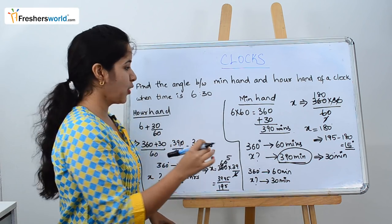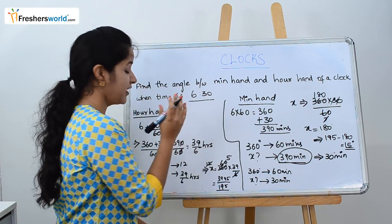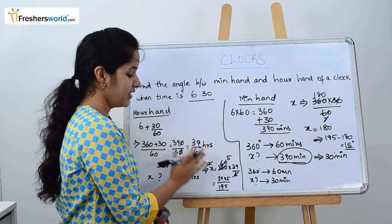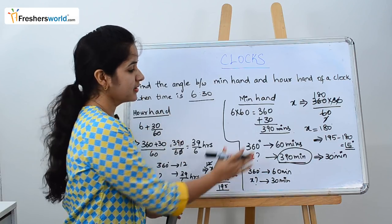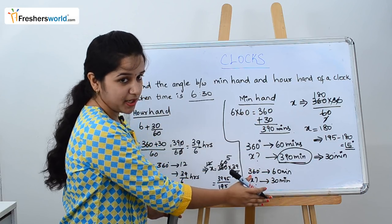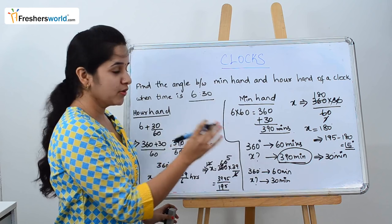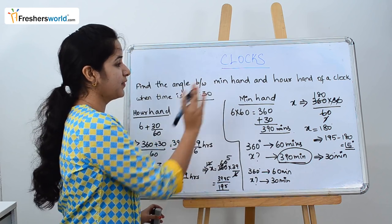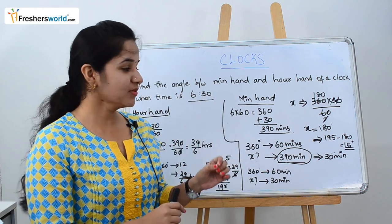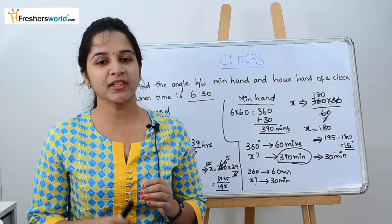They are going to ask you the same type of problem with varying times. First, find the angle for the hour hand and keep the answer. Similarly, find it for the minute hand and keep the answer. Subtract both to get the angle between the hour hand and the minute hand. This is the first type of clocks problem, and in upcoming videos we will discuss various other types.